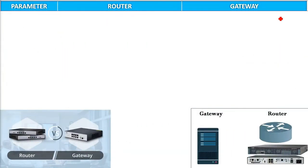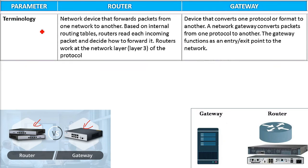Router and Gateway — this is the router, this is the gateway, so this is how they look. The terminology: a router is a network device that forwards packets from one network to another — that is the only thing.